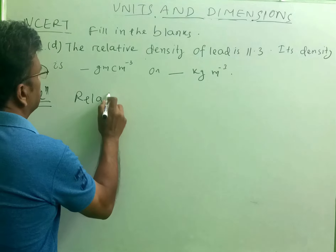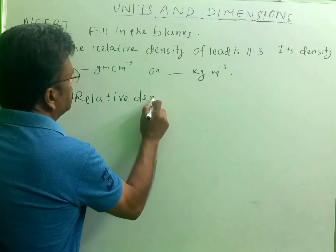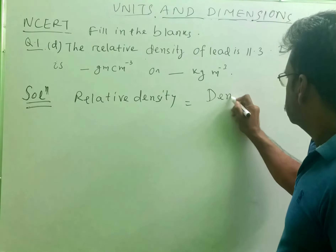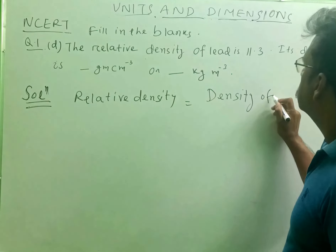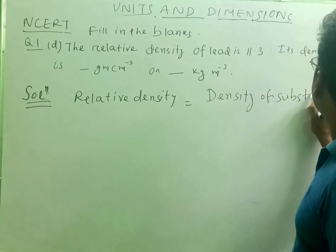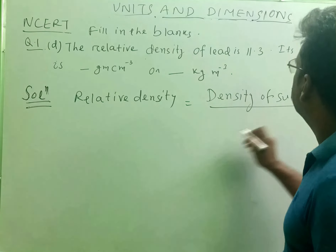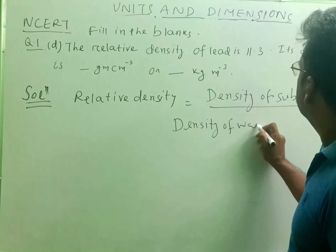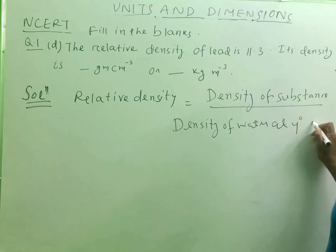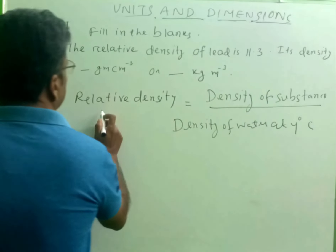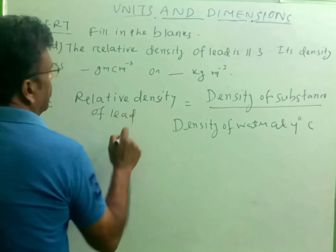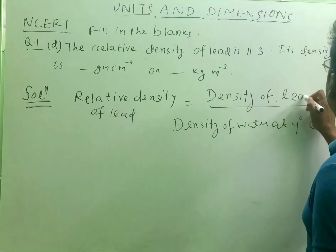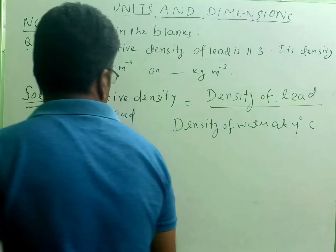What is the relative density? The relative density of any substance is the density of the substance — here, lead — divided by the density of water at 4 degrees Celsius. Then the relative density of lead will be equal to the density of lead divided by the density of water at 4 degrees centigrade.